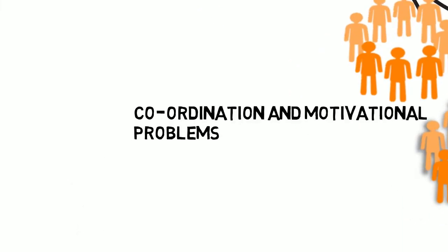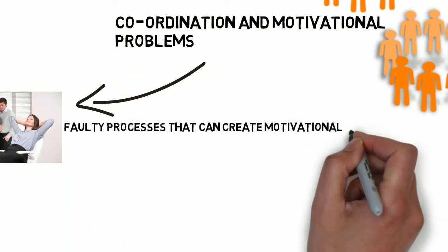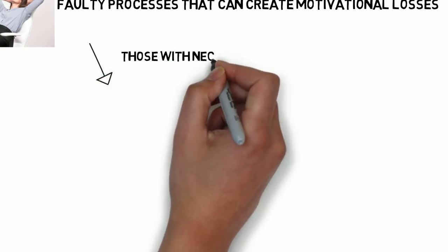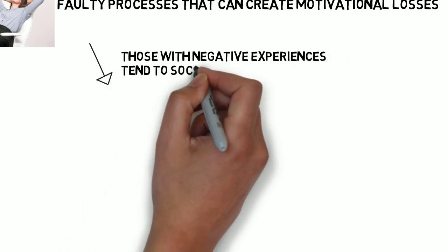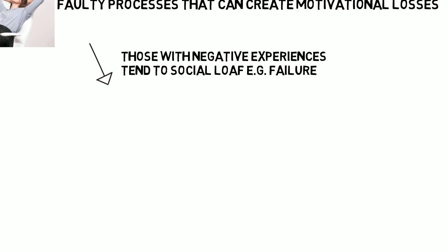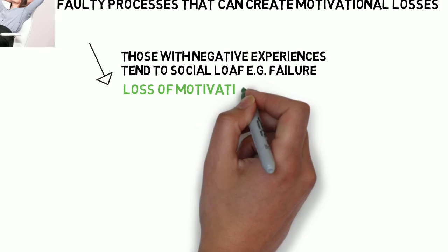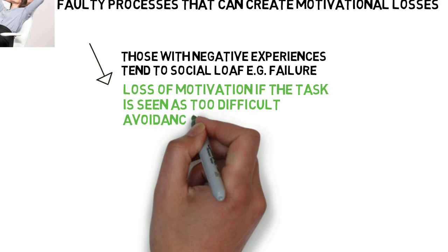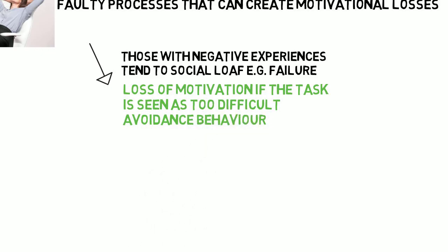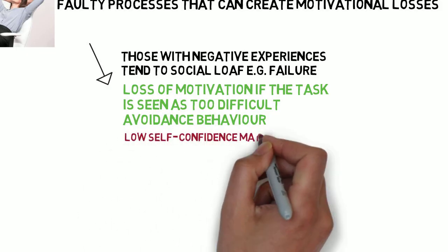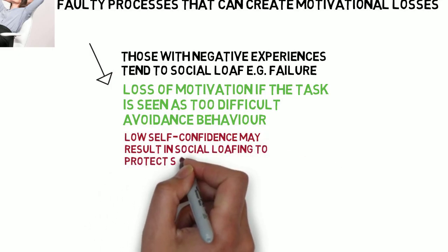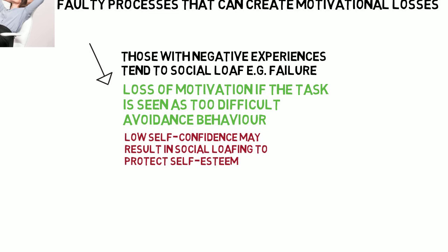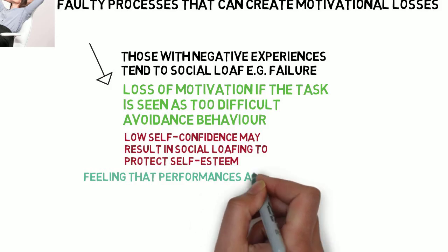What causes a person to begin social loafing? There are several faulty processes that create motivational losses. It might be that somebody's had a negative experience — if something hasn't worked out, they won't try as hard next time because they've experienced failure. It might be that the task is seen as too hard, leading them to avoid taking part or not contribute as much. It can also be down to low self-esteem or confidence, where someone protects their self-esteem by not pushing as hard in the scrum or calling out during training.